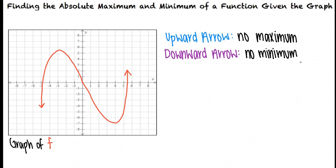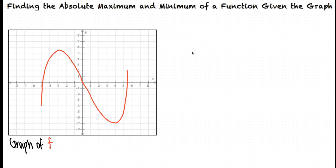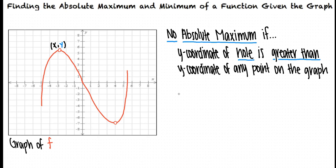Is that the only case in which there isn't an absolute maximum or minimum? Holes in the graph also restrict our ability to identify an absolute maximum or minimum. A hole in the graph is shown as an open circle and is a point that is not on the graph. If a hole in the graph of f has a greater y-coordinate than any point on the graph of f, then the function does not have an absolute maximum. If a hole has a lesser y-coordinate than any point on the graph of f, then the function does not have an absolute minimum.